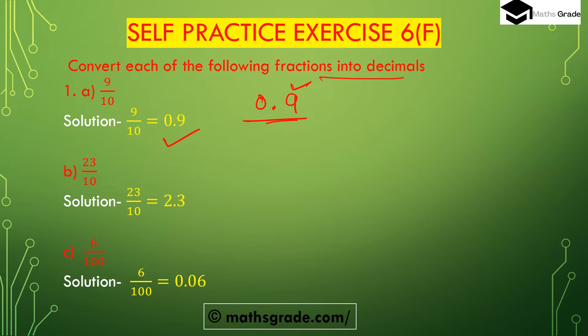Part b: 23 divided by 10. The denominator 10 has only one zero, so we place one digit after the decimal point. The numerator is 23, so placing one digit from the right gives us 2.3.